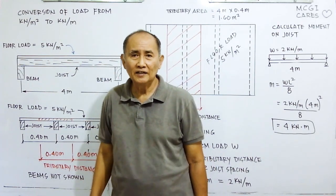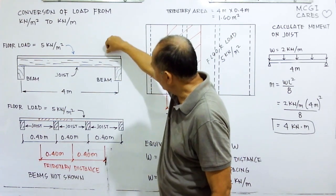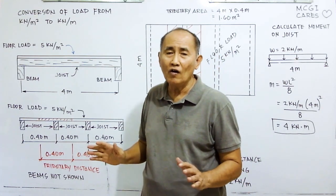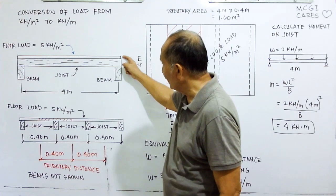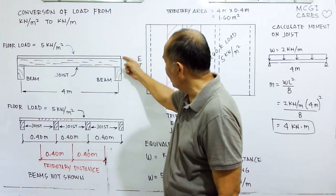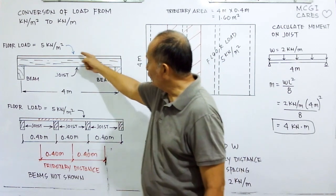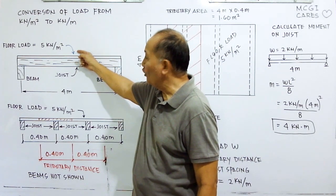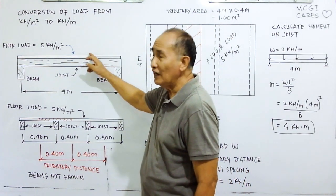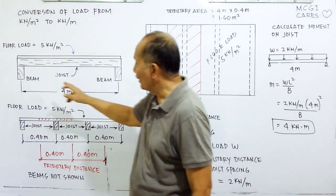As an example, we have a flooring — a slab — which may be made of floorboard, tongue and groove, or concrete slab. This slab is loaded by a live load of five kilonewton per square meter. The slab is carried by the joist, and the joist is also carried by the beam.